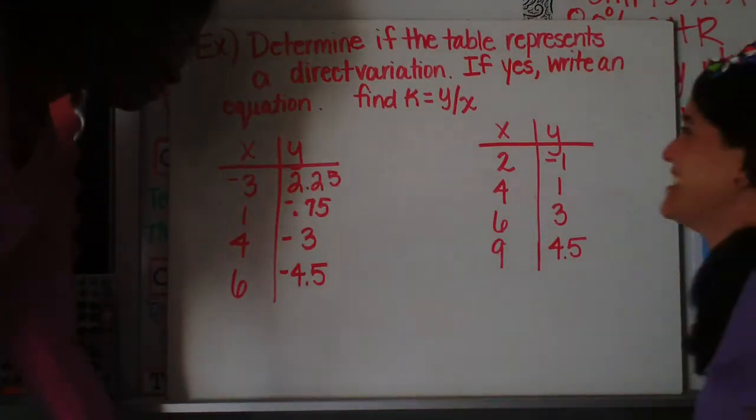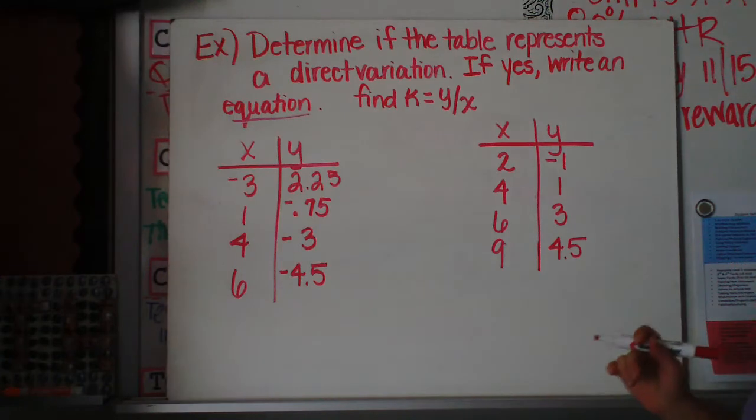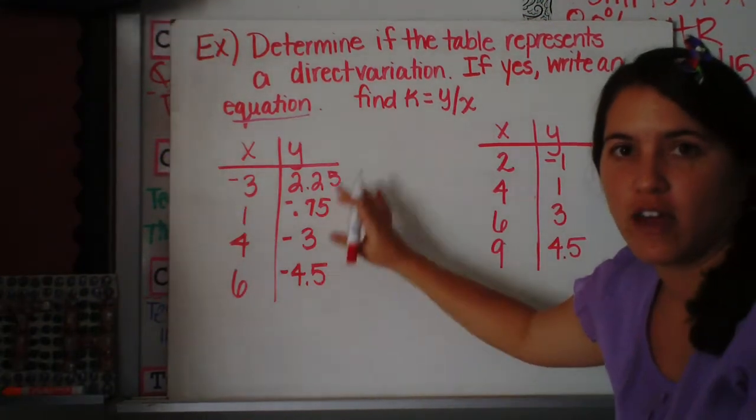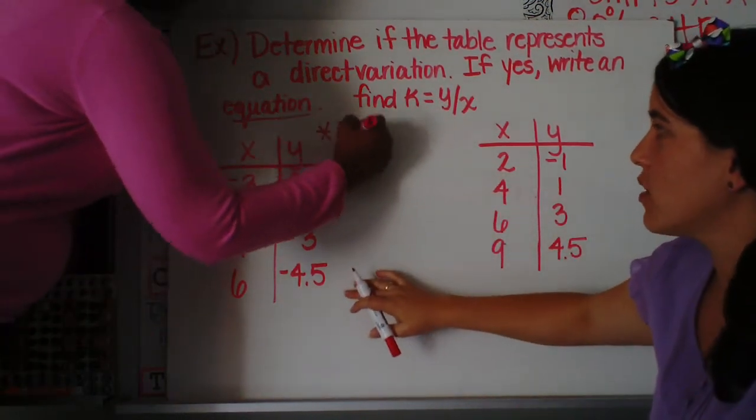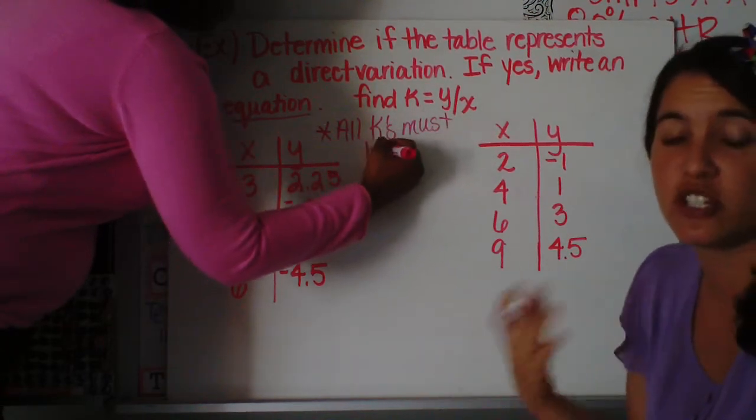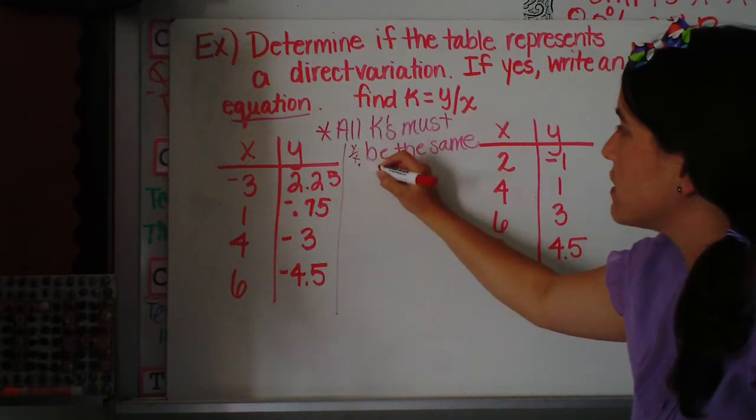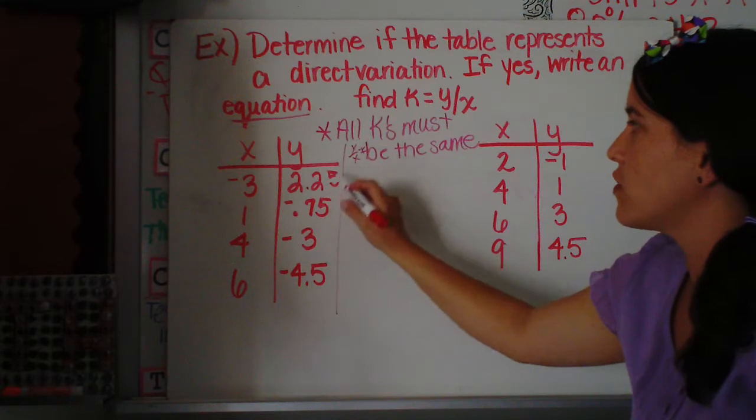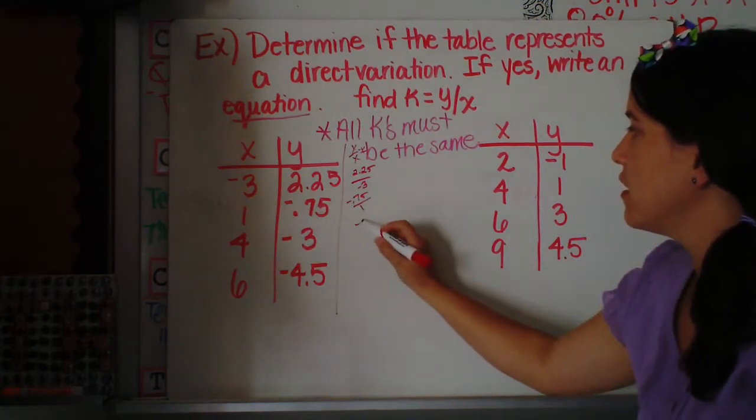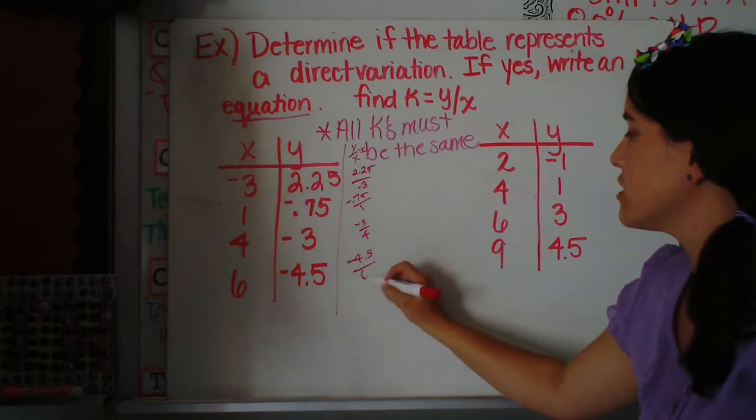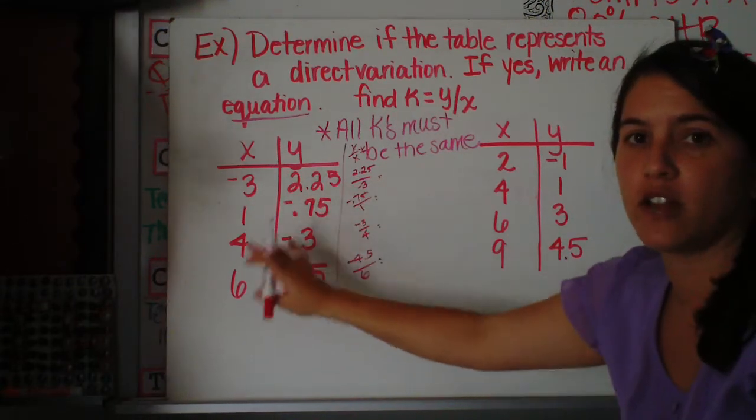Alright, so this example. Determine if the table represents a direct variation. If yes, write an equation. And so we need to find k. Again, k is equal to y over x. So if you're given a table, the way you need to determine if this is a direct variation or not is you have to figure out are all the k's the same for all of these points. So what we need to do is we are going to make a third column. This is just my opinion. I think this is going to help keep it all kind of together. We're going to make a third column and we're going to call this y over x because this is k. So when you look at it, you have your x and your y values. So y over x would be 2.25 over negative 3, negative 0.75 over 1, negative 3 over 4, and negative 4.5 over 6. So now we have y over x in all of these situations to determine our k.